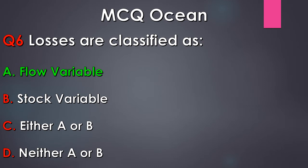The correct answer of this question is Option A, flow variable, as losses are those variables which are measured during a period of time or over a period of time. These are variables called flow variables; hence losses are classified as flow variable.